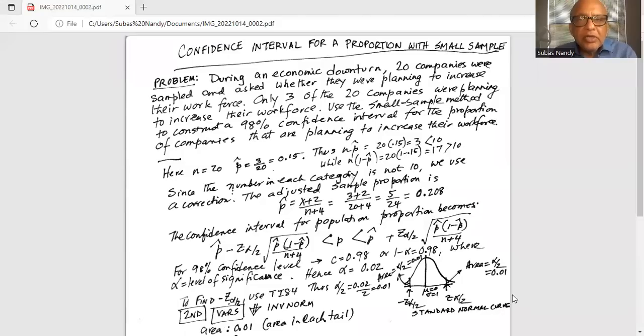During an economic downturn, 20 companies were sampled and asked whether they were planning to increase their workforce. Only three of the 20 companies were planning to increase their workforce. Use a small sample method to construct a 98% confidence interval for the proportion of companies that are planning to increase their workforce.